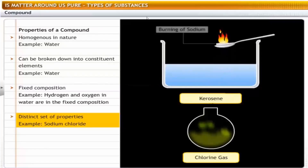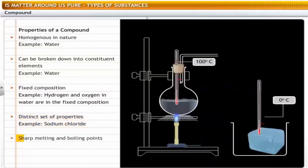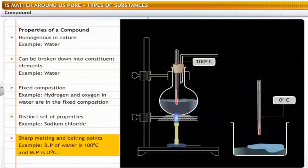Sodium is a highly reactive metal which catches fire when exposed to air, and chlorine is highly poisonous. From this we can say that compounds exhibit a distinct set of properties. A compound also has a sharp melting and boiling point — for example, water has a boiling point of 100 degrees centigrade and a melting point of 0 degrees centigrade.